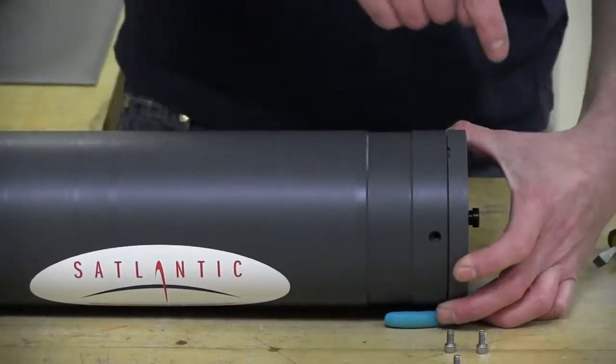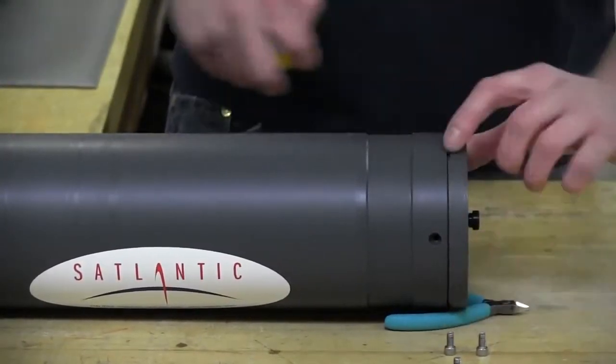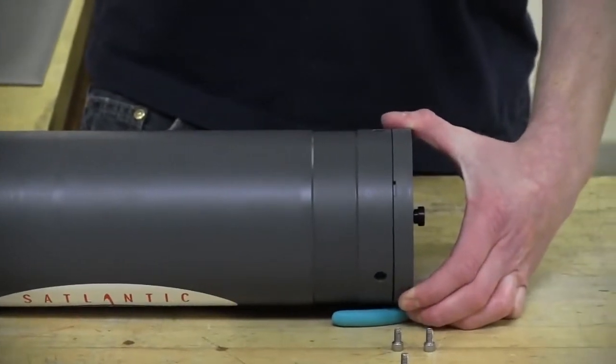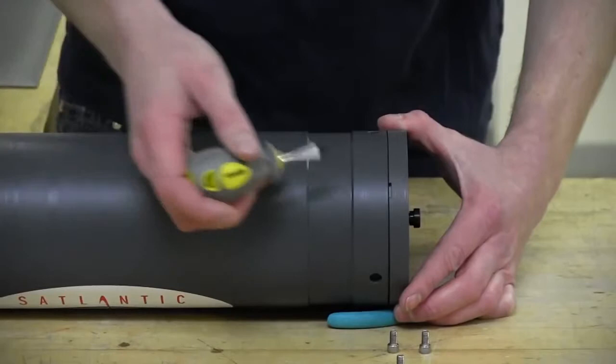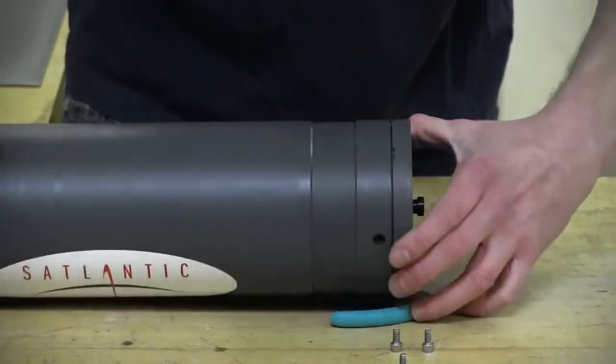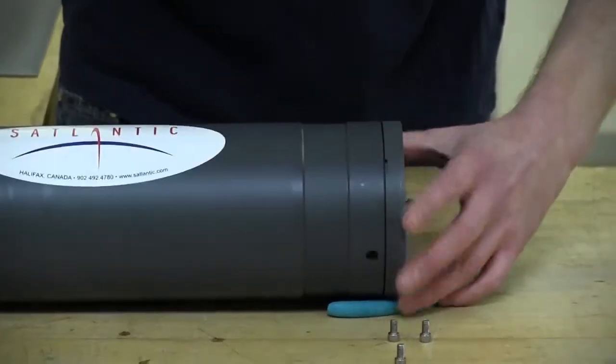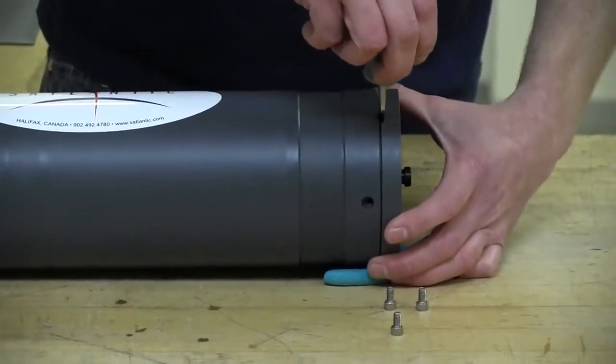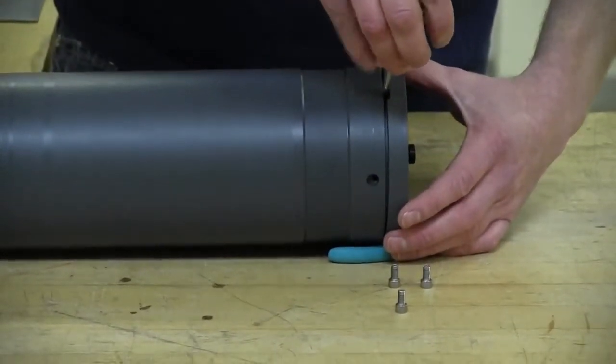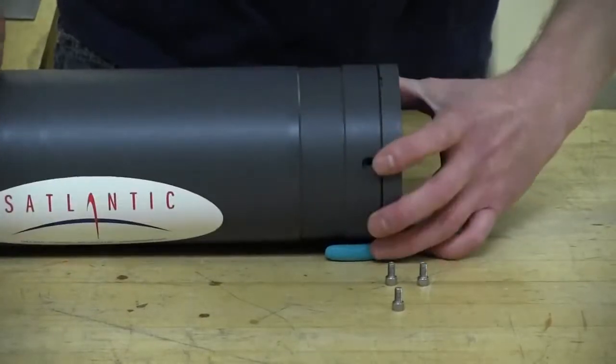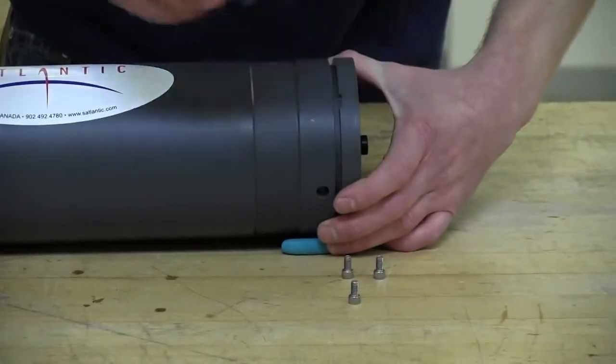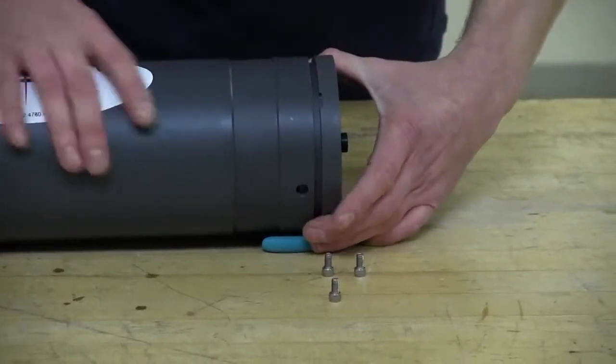On the end cap, there are three rectangular cavities that are machined into the instrument. This is where our flathead screwdriver is going to come into play. We're just going to place it into the cavity and gently pry up the end cap evenly. Just pry it up a couple millimeters at a time per each cavity by twisting the flathead screwdriver. It should come off quite easily.